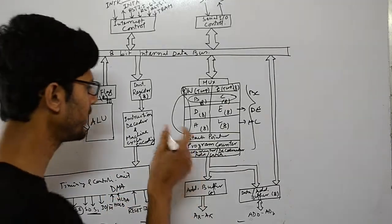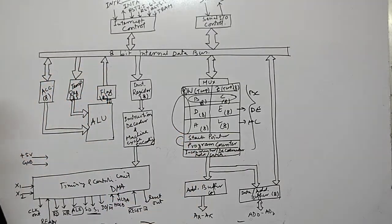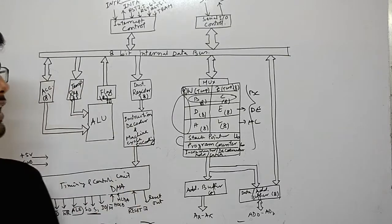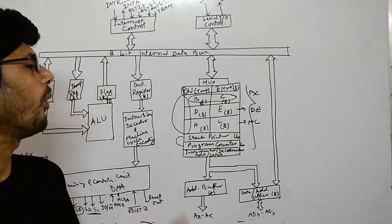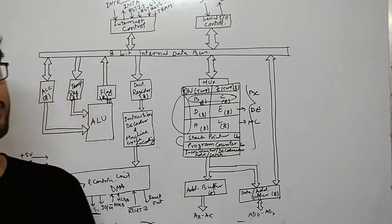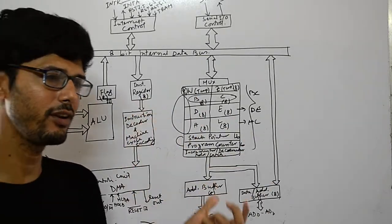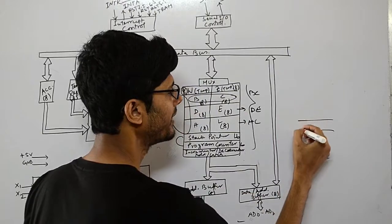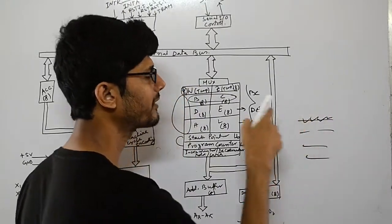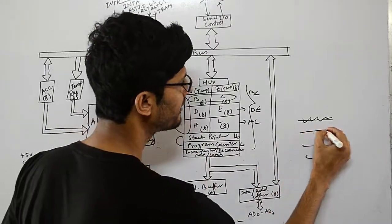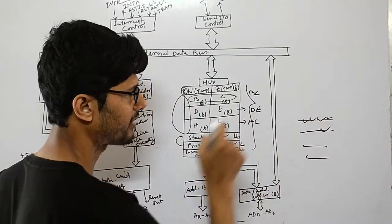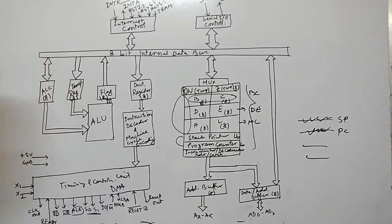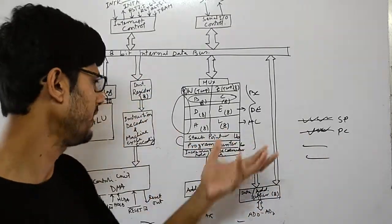There are two special-purpose registers: the stack pointer (SP) and the program counter (PC), both 16-bit registers. The stack pointer holds the address of the line currently being executed by the program. The program counter holds the address of the next instruction or next line to be executed by the processor.